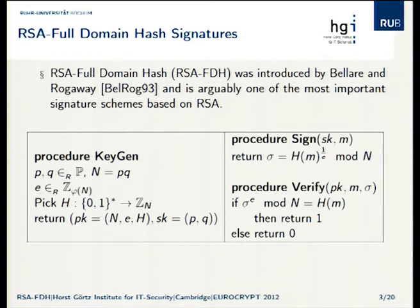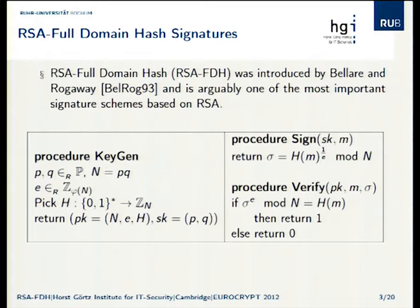So we start off with key generation. You pick two random primes of appropriate order, multiply them to get your modulus. You take an exponent e in Z*_phi(N). Pick a hash function from {0,1}* to Z_N. The public key is (N, e), and your secret key is (p, q), your prime factors. Signing is pretty simple: you just take a hash of a message, compute the e-th root modulo N, and that's your signature.